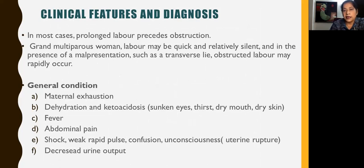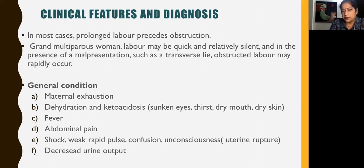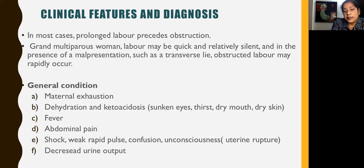In most of these cases, labour is prolonged. In a grand multiparous woman, labour may be quick but relatively prolonged, because of malpresentation such as transverse lie, and obstructed labour may rapidly develop. If you look at the general condition: there is mental exhaustion, dehydration, and ketoacidosis. You can see sunken eyes; the patient has thirst, dry mouth, dry skin. There may be sepsis or fever. There would be abdominal pain. If there is shock — a weak rapid pulse, confusion and unconsciousness — always suspect uterine rupture, which is a subsequent event. And there could be decreased urine output.